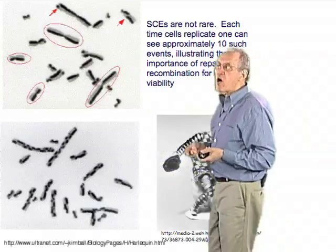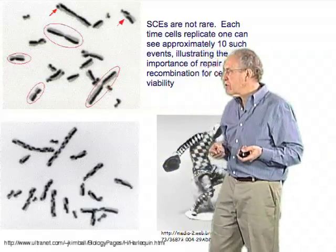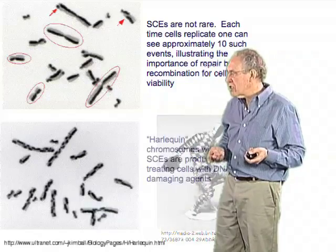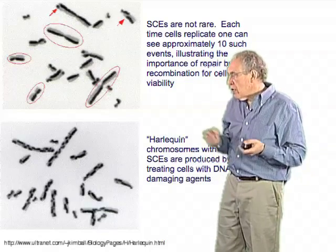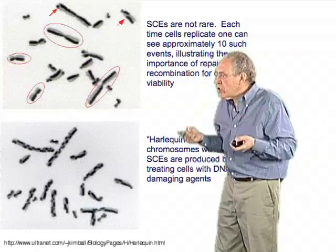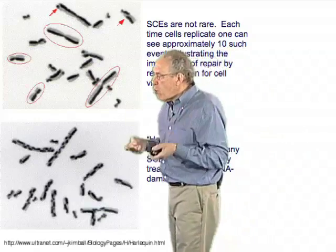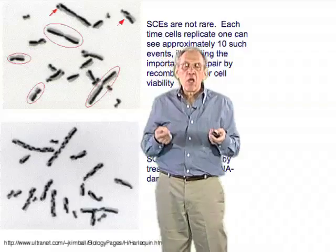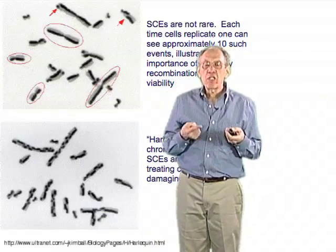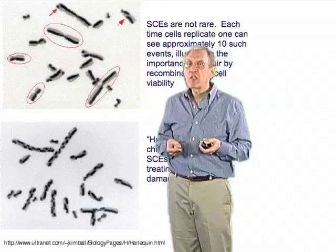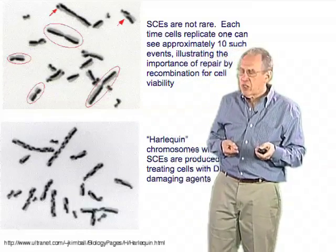Here's a picture of harlequin that illustrates this. So, what we also learn from this is that if we impose DNA damage on these cells, we're going to have an increased frequency of repair and an increased frequency of these sister chromatid exchange events.